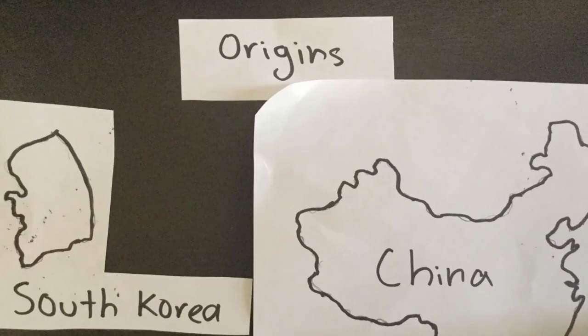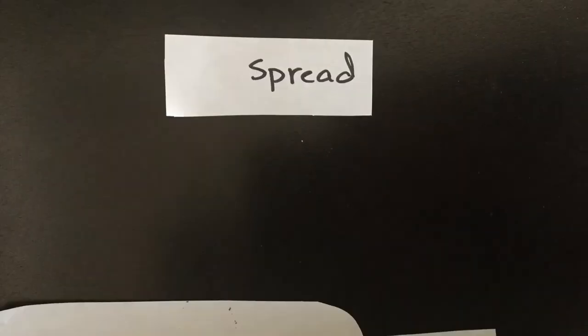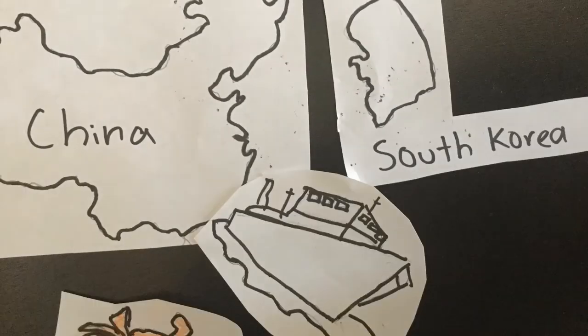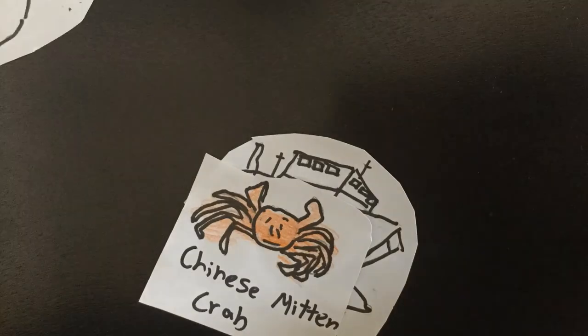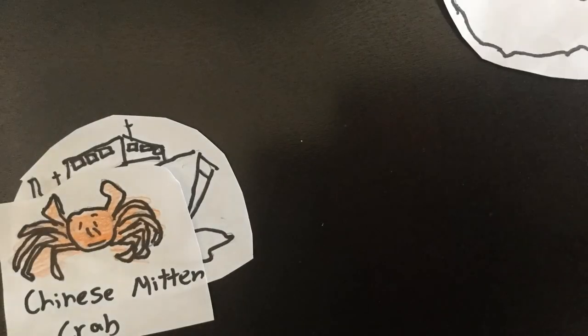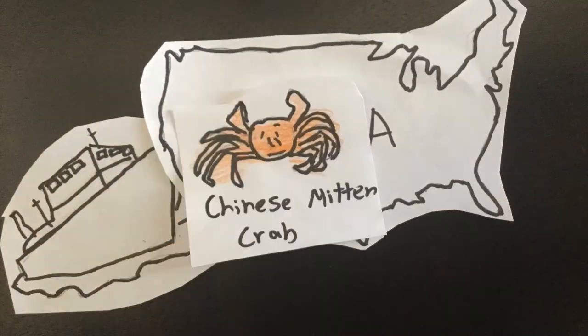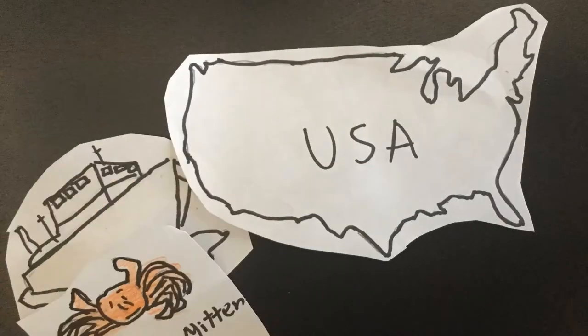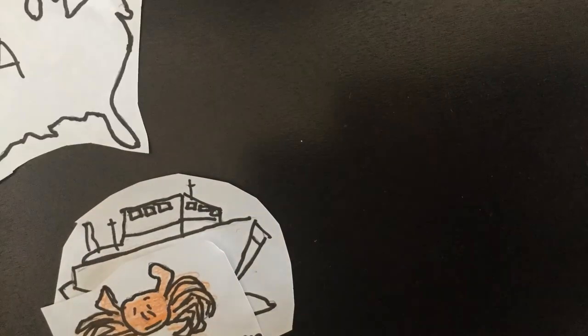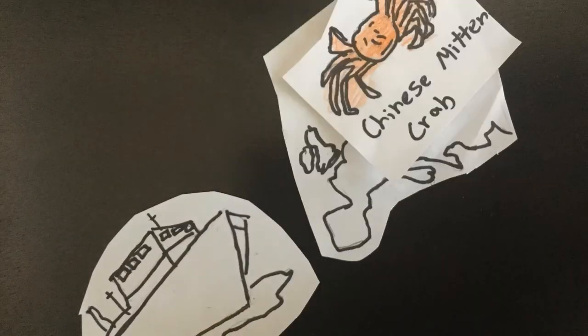The origins of the species are pretty well known. Chinese mitten crabs are native to China's and South Korea's coastal rivers and estuaries. It is believed that these crabs spread from Chinese cargo ships that released ballast water in Californian and European waters, and some believe that these crabs were intentionally released in order to establish fisheries.